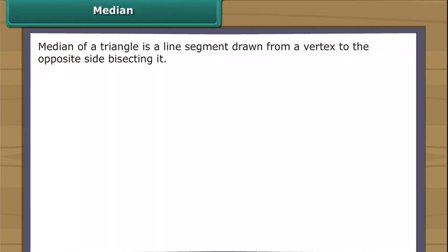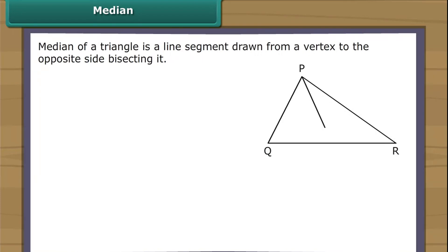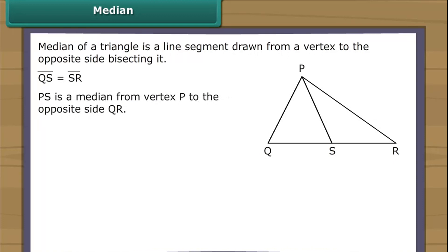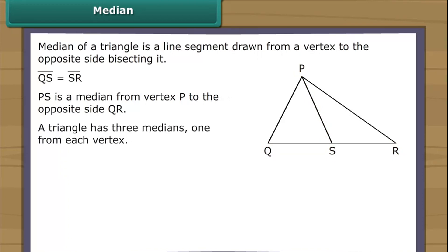A median of a triangle is a line segment drawn from a vertex to the opposite side, bisecting it. In the figure, line segment PS is drawn from vertex P to the opposite side QR, dividing QR into two equal halves. Therefore, PS is a median from vertex P to the opposite side QR. A triangle has three medians, one from each vertex.